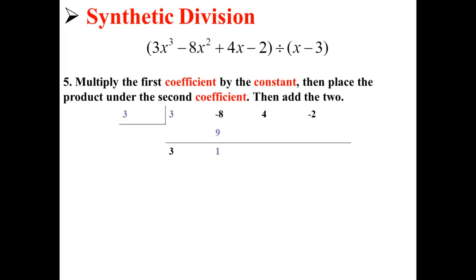Next, we multiply the first coefficient by the constant, then place the product under the second coefficient and add the two. So here, we multiplied 3 times 3 to get 9, then added -8 and 9 to get 1.